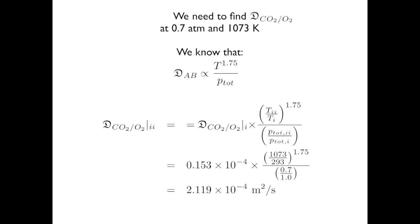We use that expression to calculate our diffusivity at condition 2 (0.7 atm, 1073 K) compared to condition 1 (293 K, 1 atm). The result is 2.119 × 10⁻⁴ m²/s.